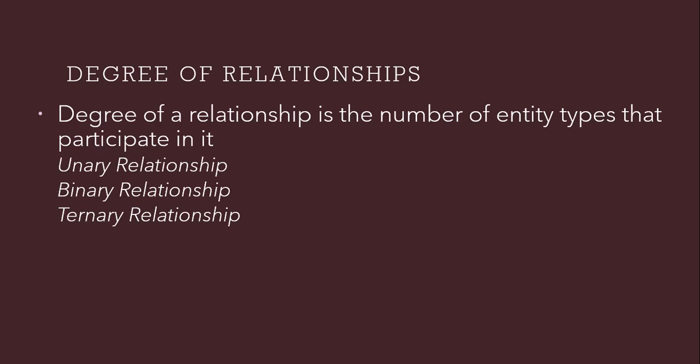Hello guys, in this tutorial I will teach you the degree of relationships. In the last lecture I discussed about the entities and attributes and attribute types in detail. Now we will discuss relationships in detail. The relationship always exists between two or more than two entities. The degree of relationship is defined as the number of entity types that participate in it. It can be a unary relationship, a binary relationship, or a ternary relationship.